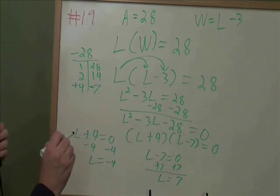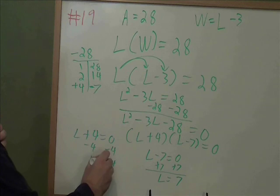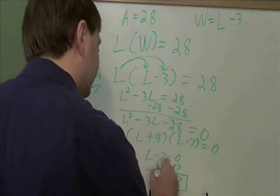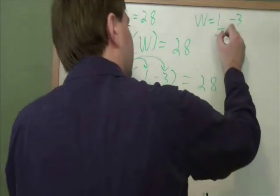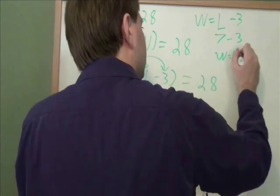Now this is a word problem. We're talking about the length of a garden. Can your garden be negative 4 feet wide? No, it can't. That doesn't make sense. So our garden has to be 7 feet long. And if we are 7 feet long, width is 3 less than that. Our width is 4.